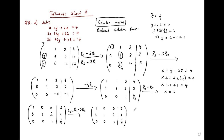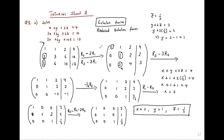In this reduced echelon form, you can see that x is 2, y is 1, z is half. No solving further — you just get them as they are. If you leave it in echelon form, you have to solve the equations. If you leave it in reduced echelon form, you just pick the values of x, y, and z directly.